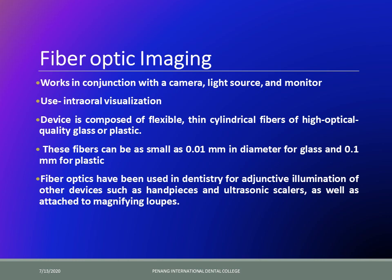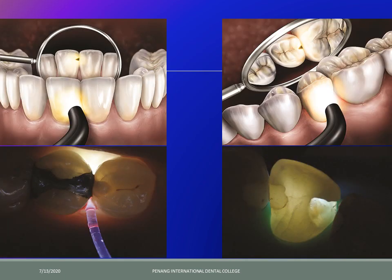Fiber optics nowadays are also used for illumination in conjunction with handpieces. Many of you would have seen air rotors which have a small LED light attached at the head, so as soon as the turbine starts, along with the water spray there is also a beam of light shining, giving you adjunctive illumination as well.